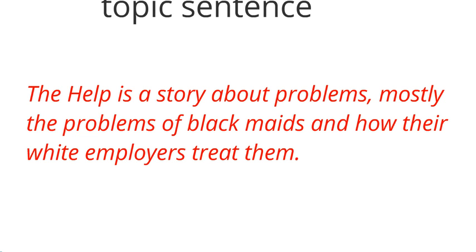You can pause and have a look at that topic sentence. It is not about what happened to a particular maid, it is not about a particular white employer. If this is generally true of this film, you would expect to be able to find three or four examples of where this happens, because if something happens only once, it might not be true for the whole film. There's my topic sentence: 'The Help is the story about problems, mostly the problems of black maids and how their white employers treat them.' I am using one of the key words from the prompt — 'problems' — and I am articulating whose problems I am talking about.